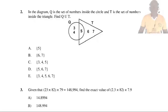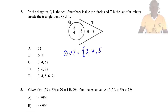Question 2: In the diagram, Q is a set of numbers inside a circle and T is a set of numbers inside a triangle. Find Q union T. For an element to be a member of Q union T, it should be a member of Q — that is 3, 4 and 5 — or a member of T — that is 5, 6 and 7. Since 5 is already written, we add 6 and 7. So the answer is E.